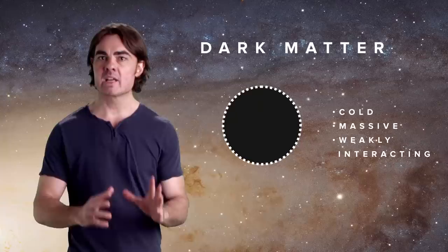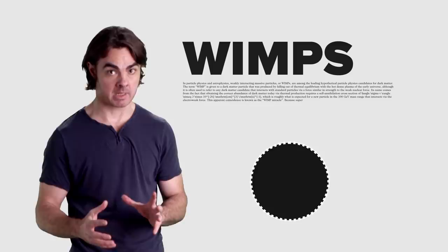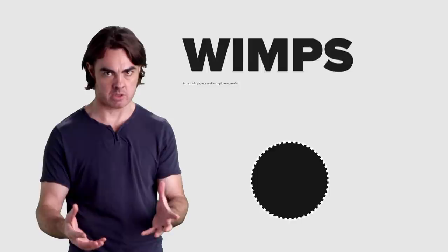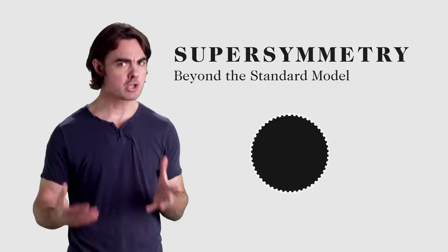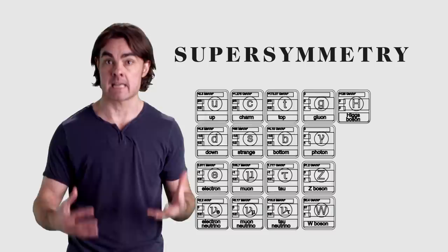Weakly interacting massive particles, WIMPs, actually refers to a specific and popular contender for dark matter. WIMPs are a family of particles that may arise out of supersymmetry. This is a funky extension to the standard model of particle physics. Now there's a lot to supersymmetry, but in short, versions of this theory predict the existence of a set of counterparts to the familiar standard model particles, but that are hundreds of times more massive.